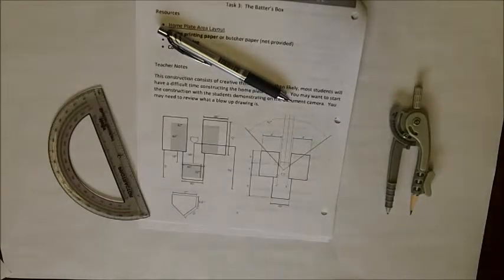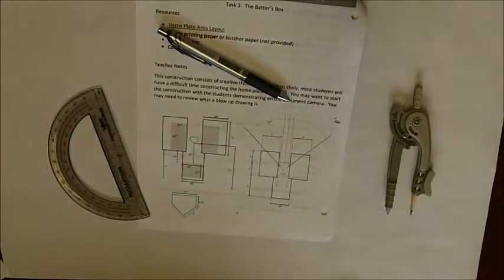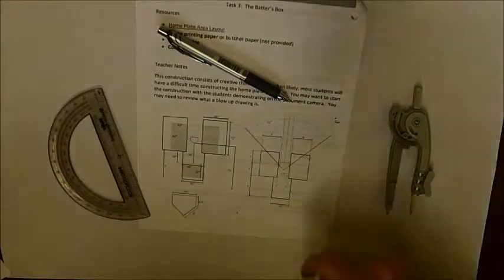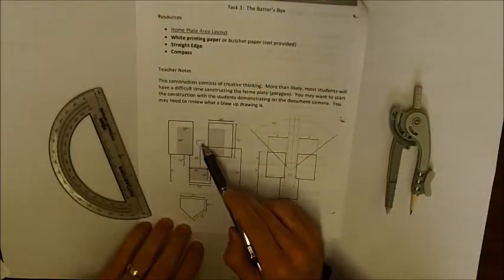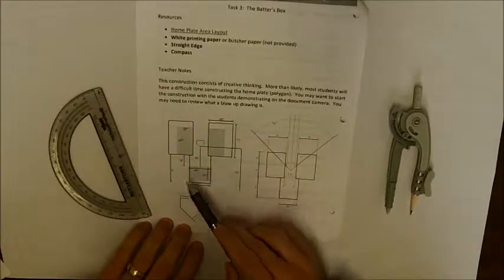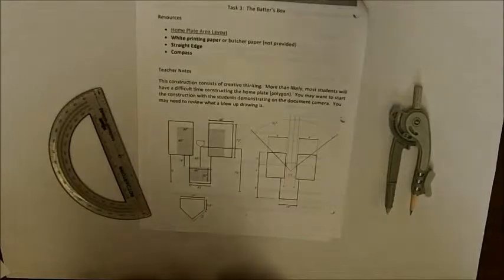Hello everyone, my name is Tim McCaffrey, and in this tutorial video, the goal is to create the home plate area for a baseball diamond. So basically the goal is to create the home plate, the left and right batter's box, and the catcher's and umpire's box. So there's a lot of work to be done.